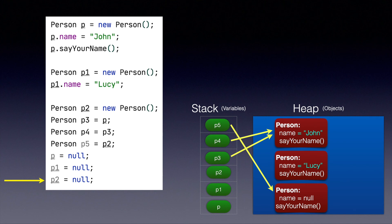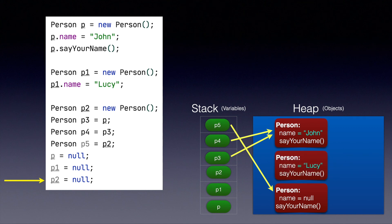Another thing to note in the heap memory: we have two links for person John — from p3 and p4. We have one link for the person whose name we haven't assigned — the link coming from p5. However, person Lucy doesn't have any link. If an object doesn't have any link from the stack,